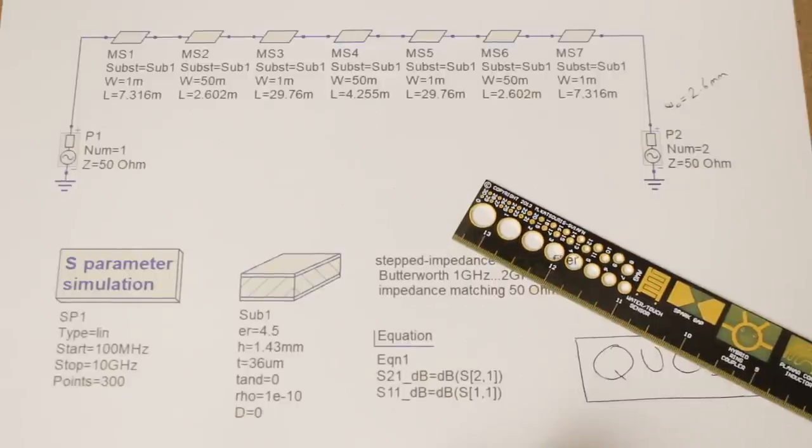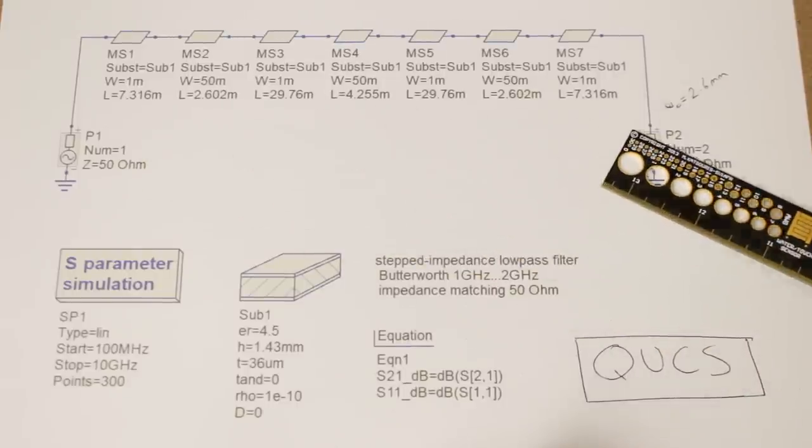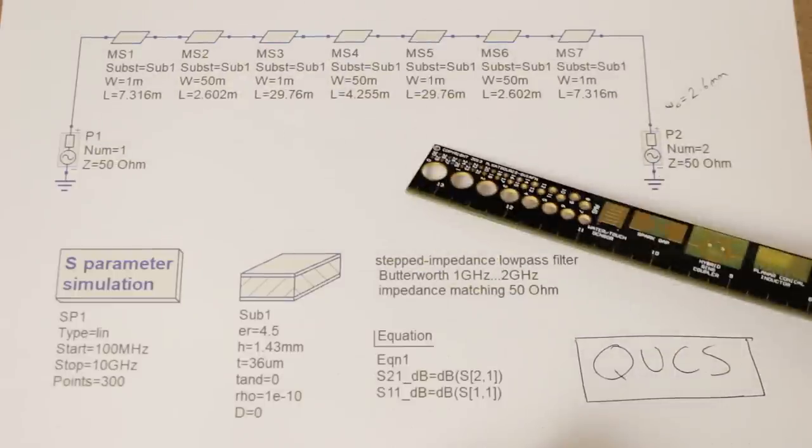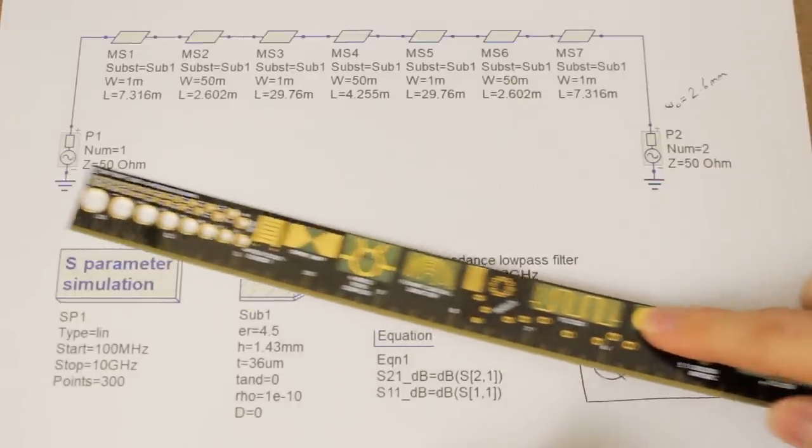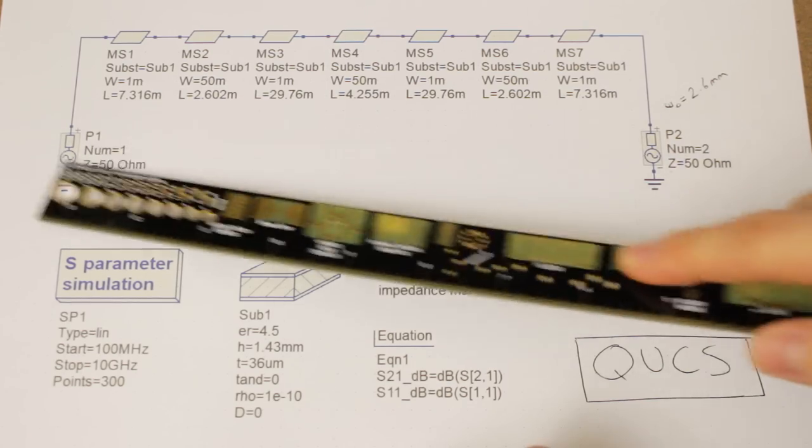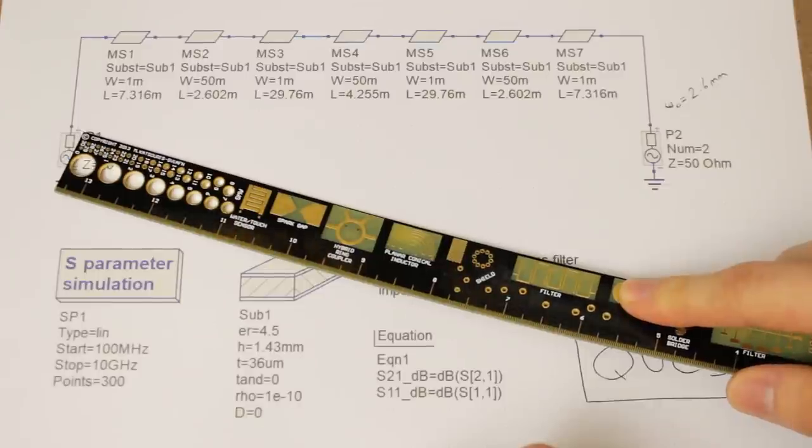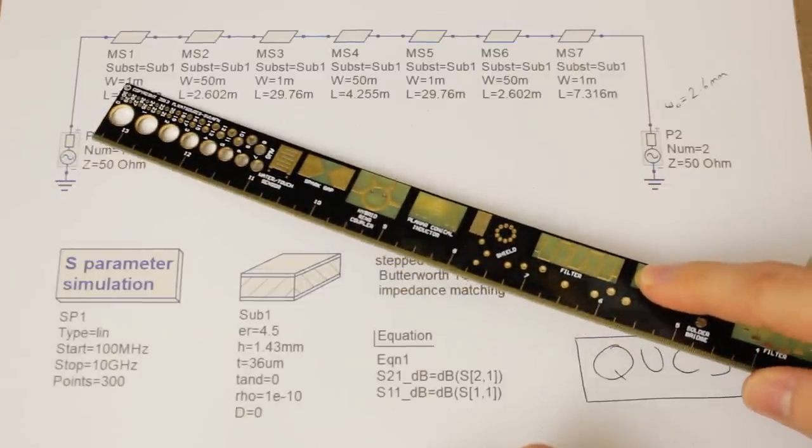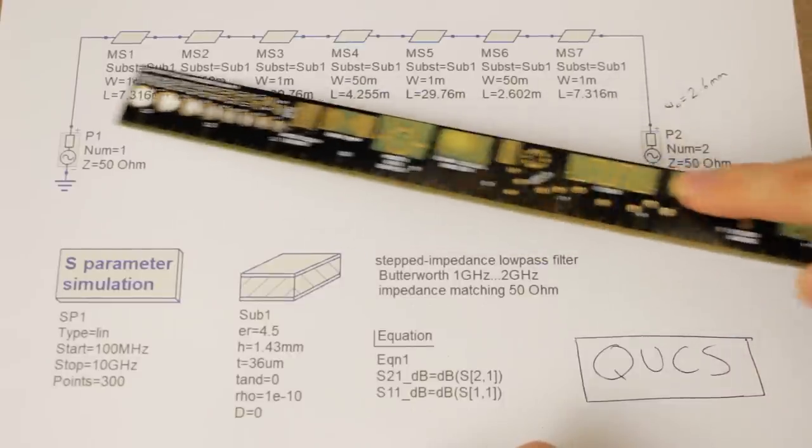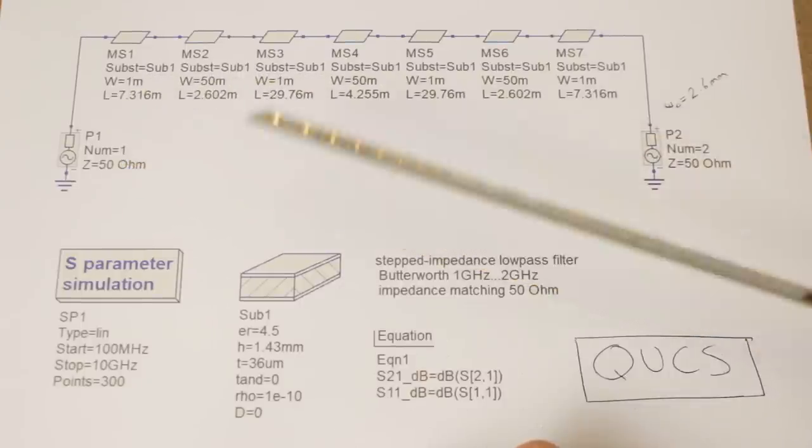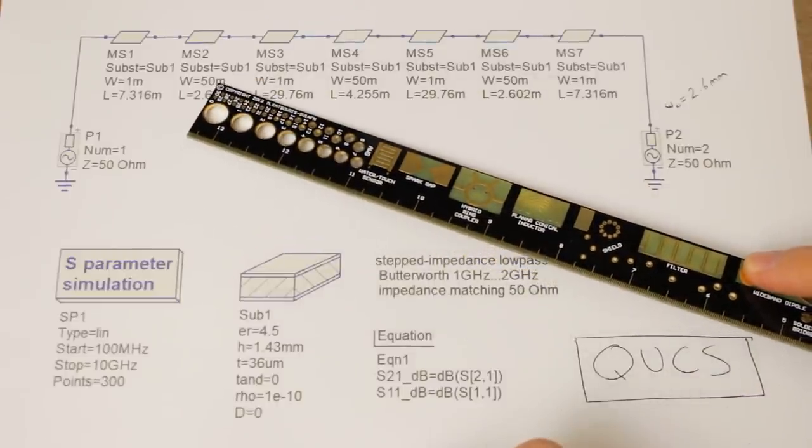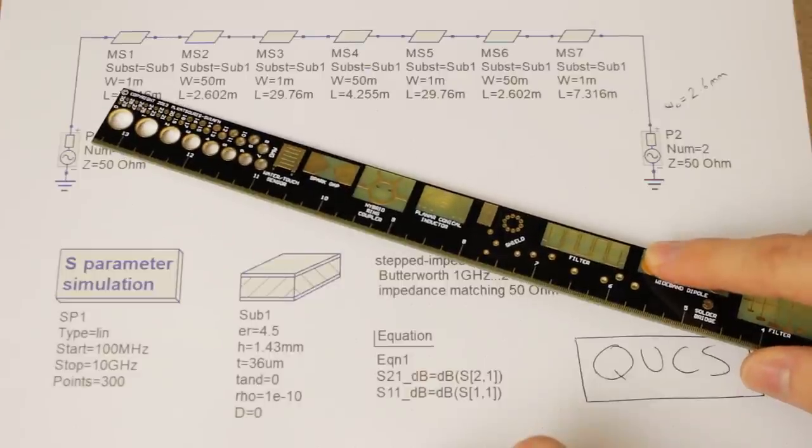So what we've got here is what's called a stepped impedance low pass filter. Stepped impedance means that each one of these tiny little microstrip elements has a different impedance. So the transmission line that we have coming in via our connector is going to have a width of 2.6mm so that the characteristic impedance of the input trace is 50 ohms. Now you can see that the width of these other traces is not 2.6mm so these are all going to have different characteristic impedances.